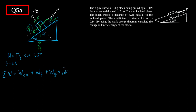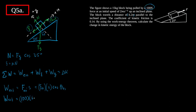First, the work done by the external force equals F_ext · s · cos θ. The external force is 100 N, the displacement is 6.2 m, and the angle between the force and displacement is 0° since the force is applied along the incline. So W_ext = 100 × 6.2 × cos 0° = 620 joules.